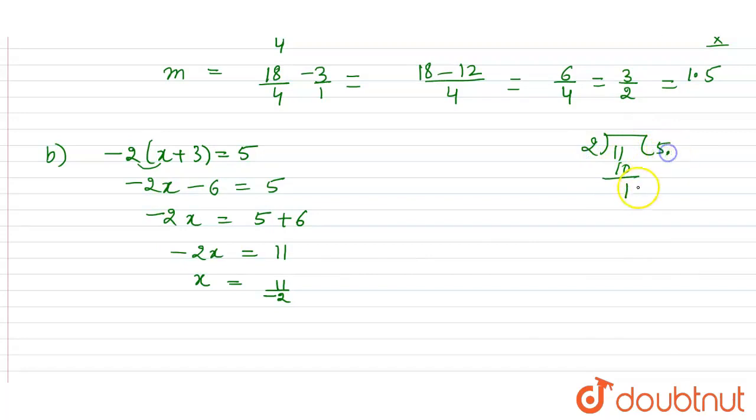Now let's divide 11 by 2. So 2 into 5 is 10. 1 is the remainder. Then 1 is less than 0. So we are taking the decimal and the 0. So 5 into 5 is 10. So minus 5.5 is the required answer, is the value of x.